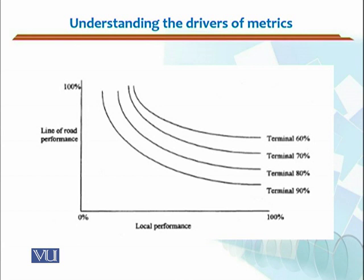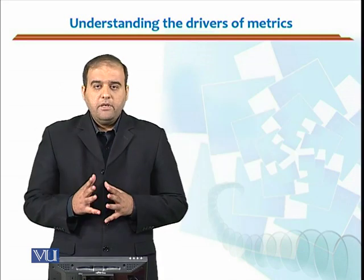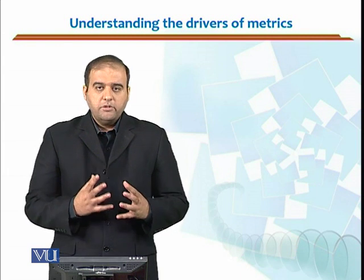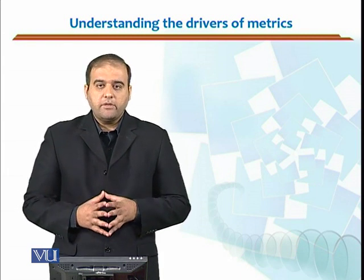This is the depiction of this example. On your x-axis, you have the local performance, and on your y-axis, you have line of road performance. By taking the inverse of the service reliability, we have different values for different terminals. You can see the performance is higher for the terminals with 90% road performance. In this way, the model can be used as a driver for making some metrics. We have seen a simple example in which different types of models would actually lead to some performance metric. Thank you.